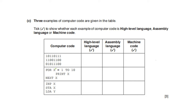Three examples of computer code are given. Tick whether each is high level language, assembly language, or machine code. High level language is close to human language (English); assembly language uses mnemonics; machine code uses zeros and ones. The first example uses zeros and ones — machine code. The second uses English keywords like 'print' and 'for' — high level language. The third uses mnemonics like INPST, ALD, A — assembly language.